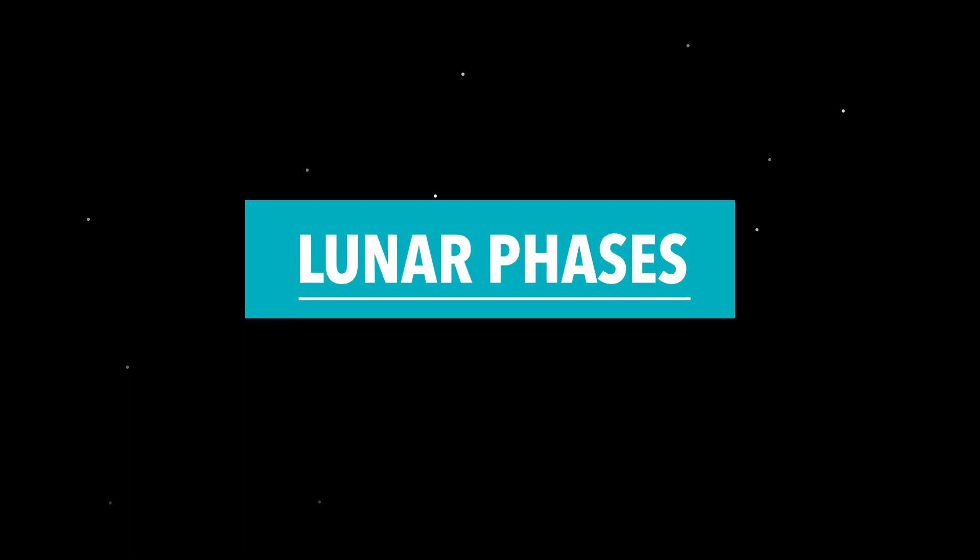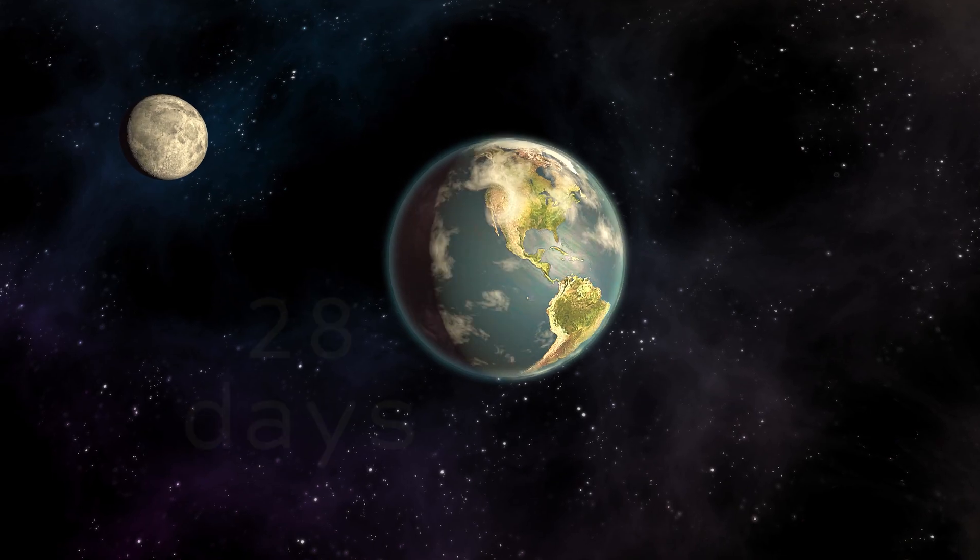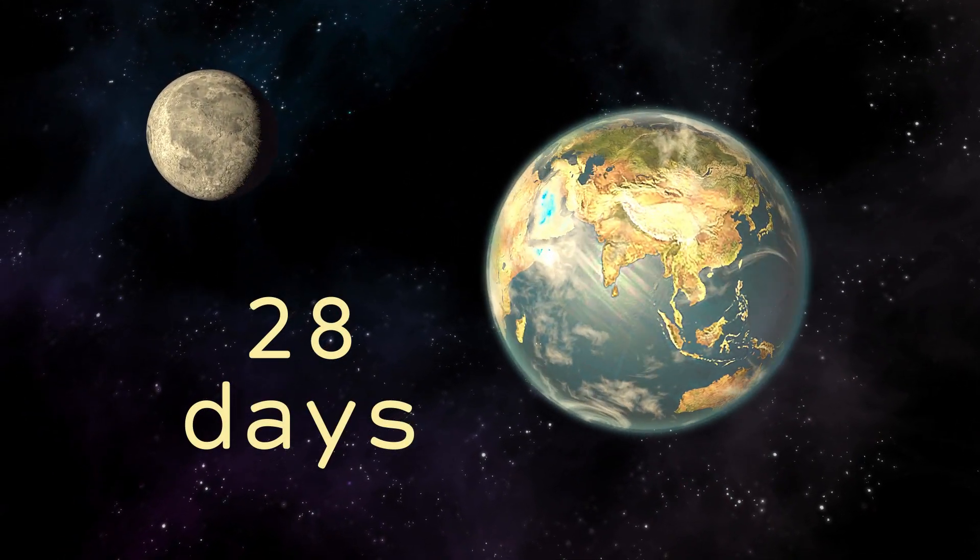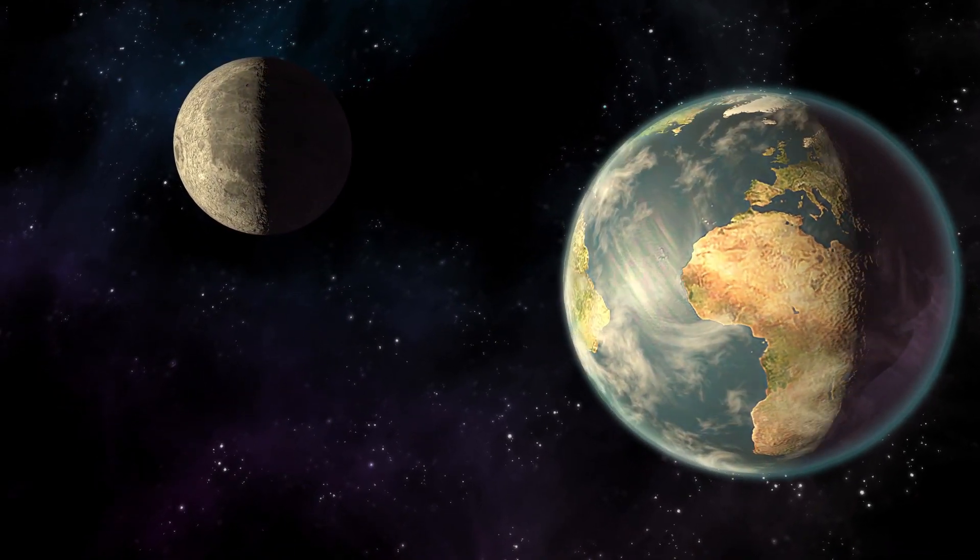Lunar phases. The Moon goes through a complete Moon cycle in about 28 days. Depending on which part of the Moon is in sunlight, different lunar phases can be seen from Earth.